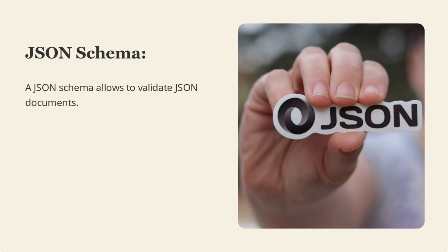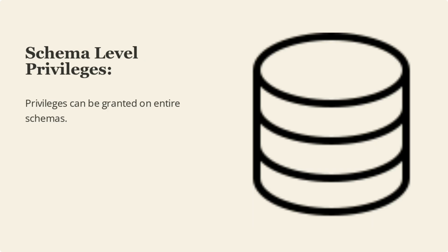A JSON schema allows validation of JSON documents. It provides a way to define the structure and constraints of JSON data, ensuring it conforms to a specific format. This is particularly useful for ensuring data integrity and consistency within a database or application. With Oracle 23c, JSON schema support has been enhanced to provide more robust validation capabilities, making it easier to manage and work with JSON data.